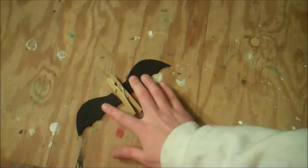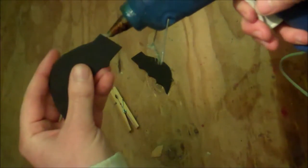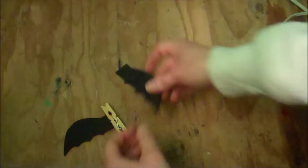You're going to end up gluing the wings onto the side of the clothespin. Take a little bit of hot glue, run it along the edge of one of the wings, and glue that onto the side.